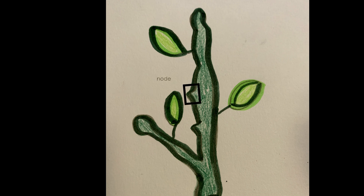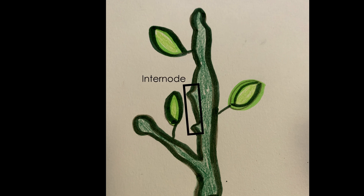A node is the point of attachment of a leaf or leaves to the stem. And finally, an internode is a portion of stem between two nodes.